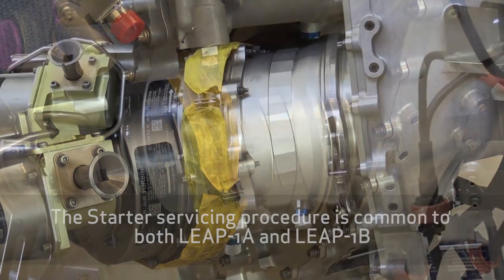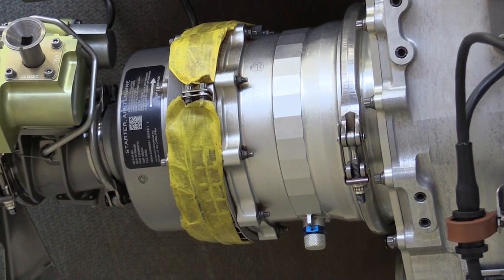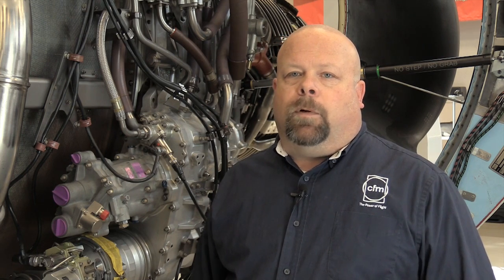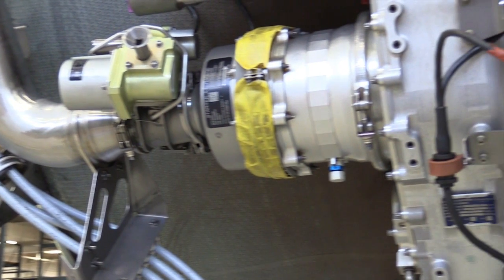The starter is installed on the accessory gearbox and there are two methods for servicing the starter. The first method requires that the starter be removed from the gearbox and oil is manually added through the fill port on the starter. That fill port is not accessible when the starter is installed on the gearbox.